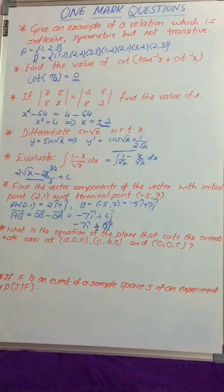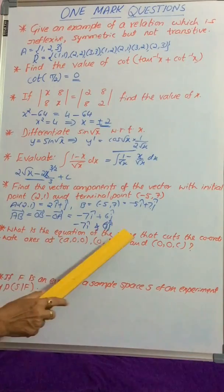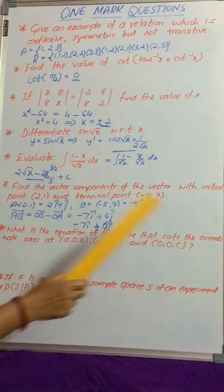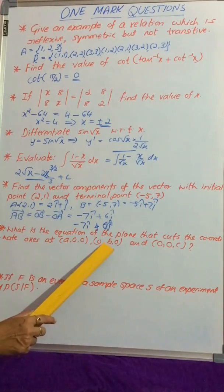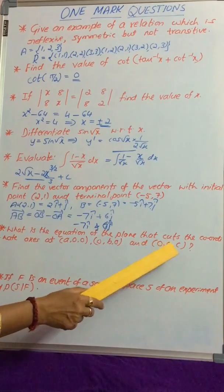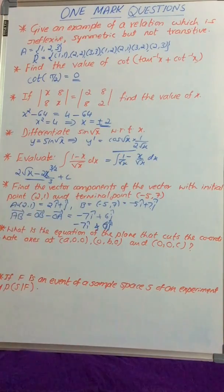Now move on to the next question. What is the equation of the plane that cuts the coordinate axes at (a,0,0), (0,b,0), and (0,0,c)? That means the plane cuts the x-axis at a, y-axis at b, and z-axis at c.